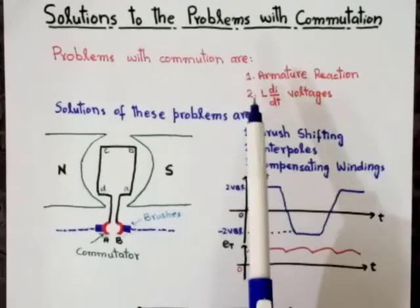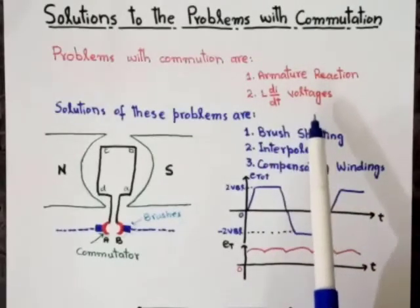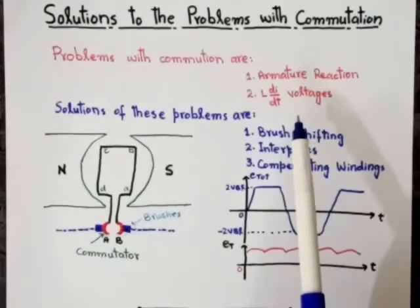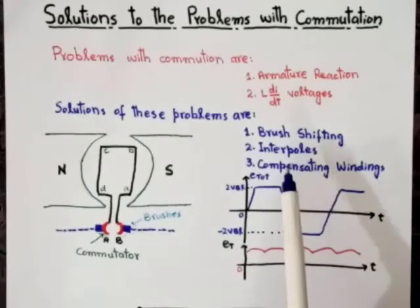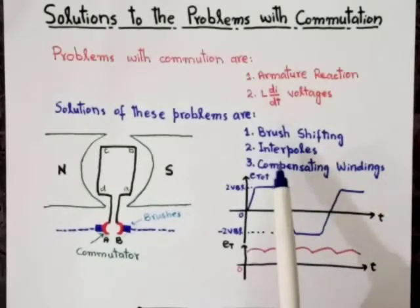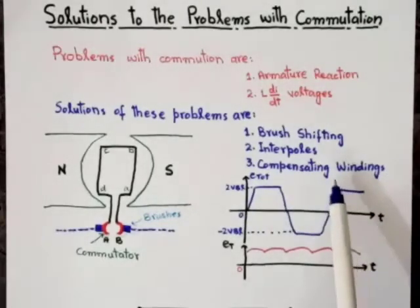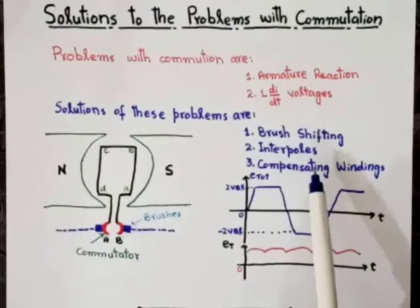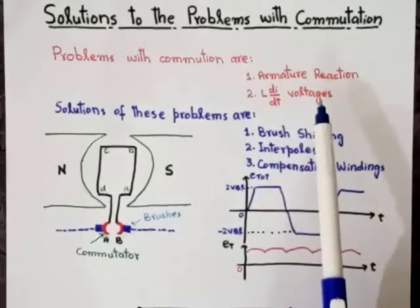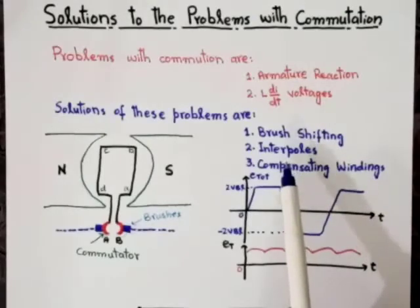To solve the problems of commutation — that is armature reaction and L·di/dt voltages — there are three main techniques used. The first one is brush shifting, the second one is interpoles, and the third one is compensating windings. These are the main solutions widely accepted for solving the problems of armature reaction and L·di/dt voltages. Let's discuss these three techniques in detail.